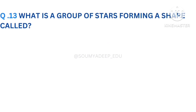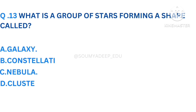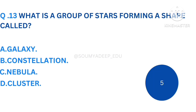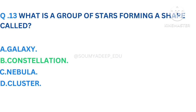What is a group of stars forming a shape called? The options are galaxy, constellation, nebula, cluster. Your time starts now. The answer is constellation. Let's move to the next question.